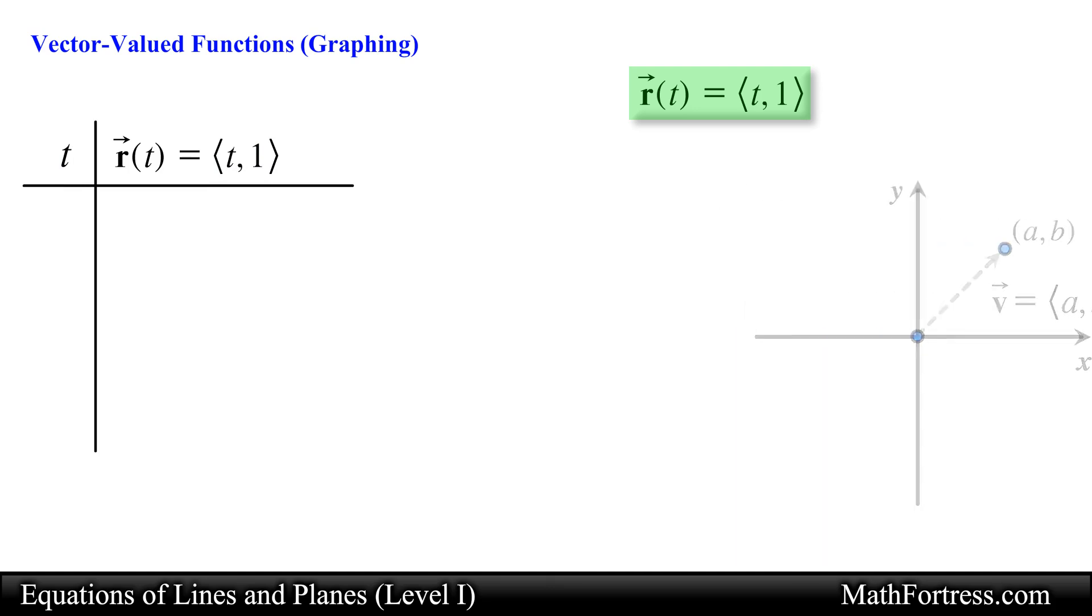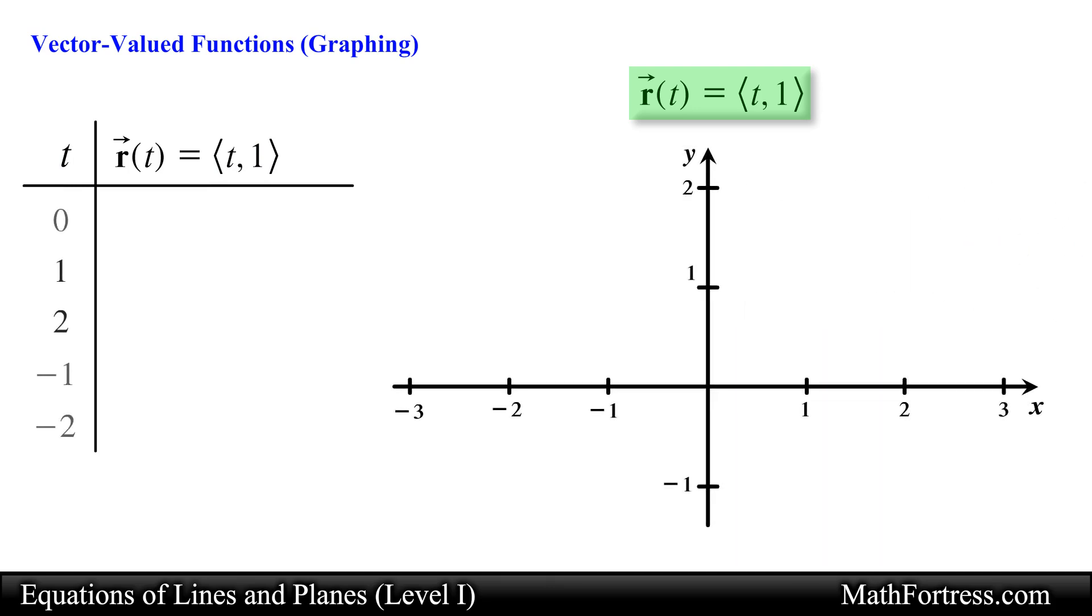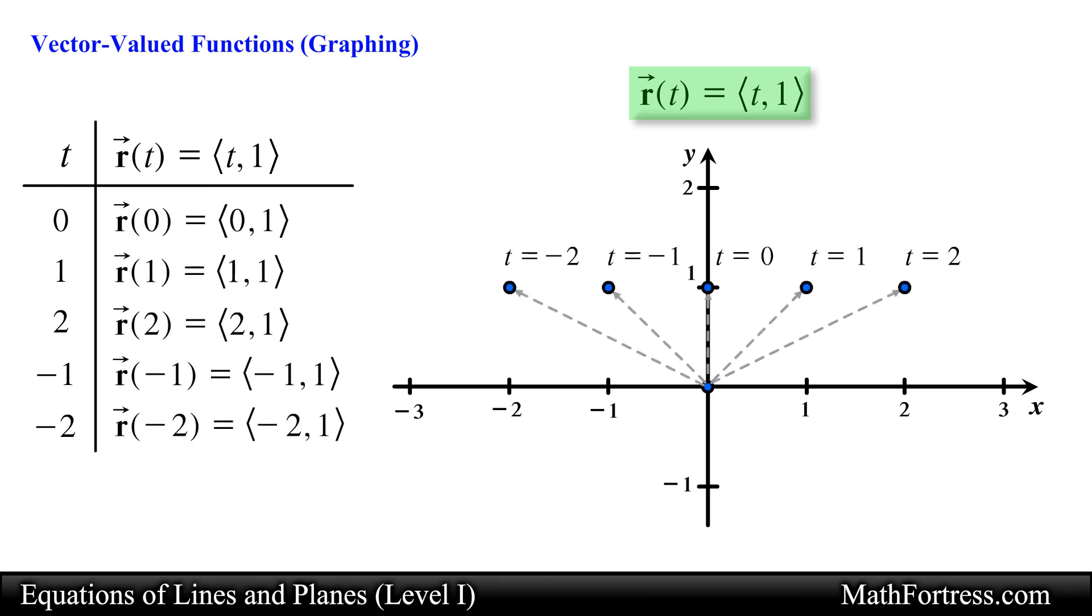So in order to generate the graph of this vector function, we simply plug in some values of the variable t and then plot the point that corresponds to each position vector. We then connect the points. Each of these points will lie on the graph of the vector function. We can do this for other values of t. For simplicity sake, let's use the set of integers for the values of t. Keep in mind that you can use any real number for t.